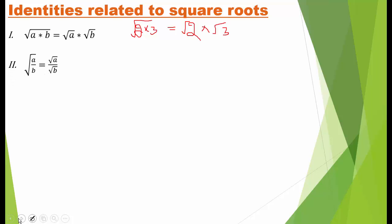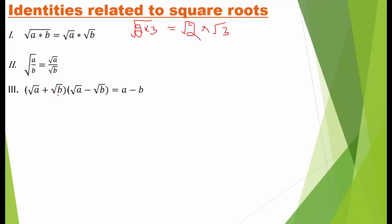For division: if two numbers are in division, the square root of the quotient equals the quotient of their square roots. The third identity: root a plus root b, multiplied by root a minus root b. This is of the form x plus y times x minus y, which equals x squared minus y squared. So this gives a minus b.